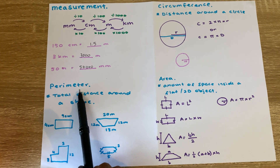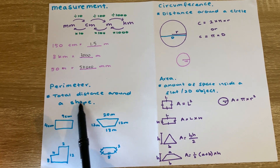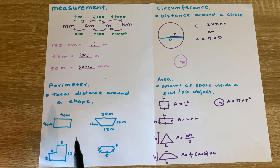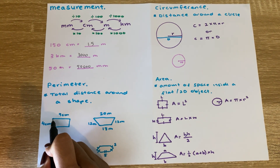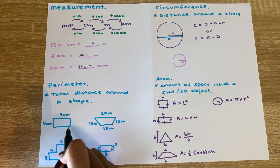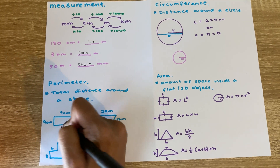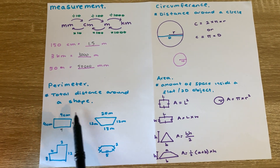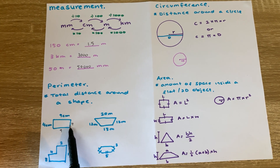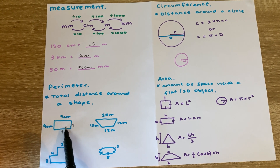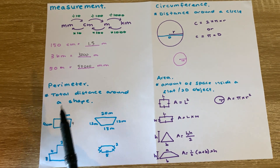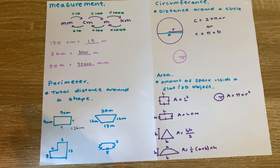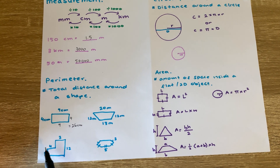Perimeter means the total distance around a two-dimensional shape. Here we have a rectangle — we're told this side is 9 centimeters, which means the opposite side is also 9 centimeters, and this side is 4, so the opposite side is also 4. Because perimeter is the total distance around the shape, we add all sides: 9 plus 4 plus 4 plus 9 equals 26 centimeters.